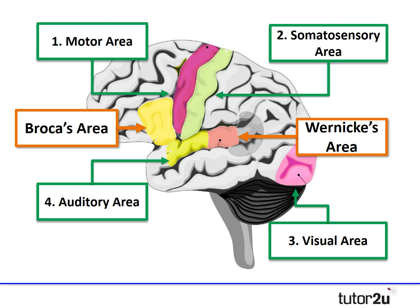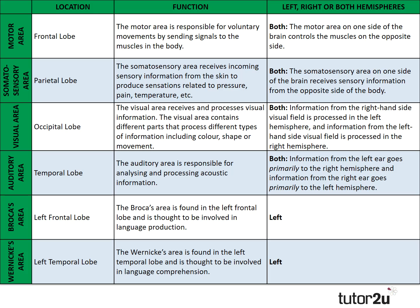All six areas are now shown on screen, grouped as the four key areas plus the two language centres in orange. It's useful to display this in a table showing where each area is located and its function. The motor area is in the frontal lobe, somatosensory in the parietal, visual area in the occipital lobe, and auditory area in the temporal lobe — all spanning both hemispheres. The Broca's and Wernicke's areas are both located in the left hemisphere only.